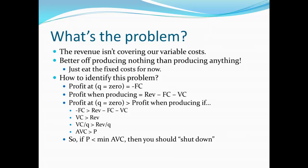If the price we can charge is less than the minimum of our average variable cost, we should shut down — produce nothing and eat the fixed cost for now. For that reason, we call the minimum average variable cost the shutdown point: it is at that point that we decide we should shut down.